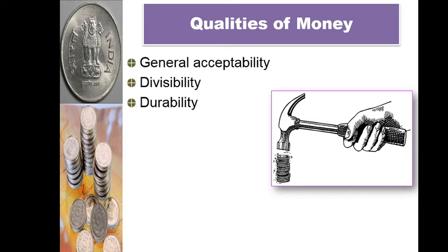Next quality is durability. Money should also possess the characteristic of durability. One of the difficulties of the barter system is the storage of commodity money. In the barter system, commodities like wheat, rice, animal skin, animal hair, tusk, salt, and rare articles are used as money. But in the case of perishable goods like agricultural goods, there is a problem with storage.